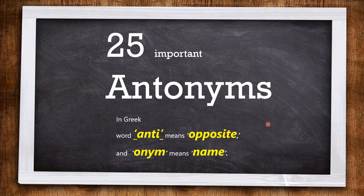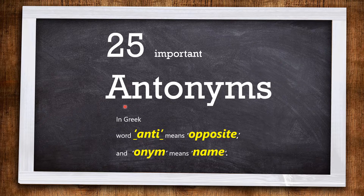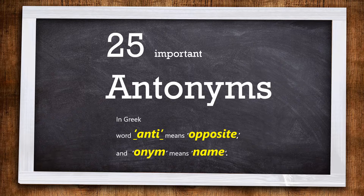Let me make you understand the meaning of the word antonym. In Greek language, this is a word which has been originated from Greek. The word 'anti' means opposite, and 'onym' means name. So altogether, antonyms are the names of opposites. Now I think you are all ready — let's jump right in.